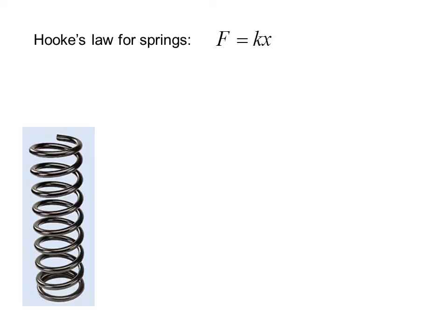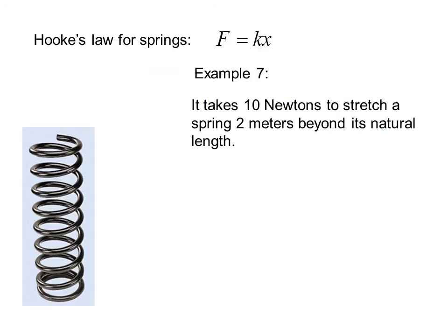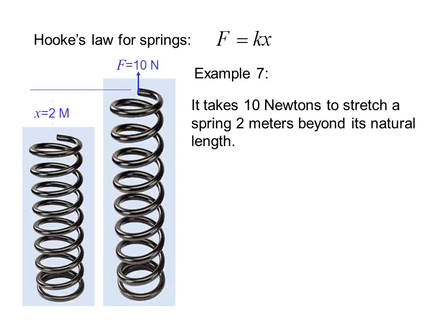Hooke's law for springs: F = kx. X is the distance that the spring is extended beyond its natural length, and k is the spring constant. Example 7: It takes 10 newtons to stretch a spring 2 meters beyond its natural length. So we've used a force of 10 newtons and the change in length is 2 meters. That gives us 10 = k × 2, or 5 = k. So now our equation becomes F = 5x.